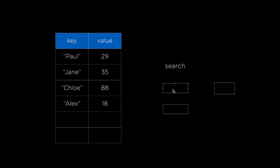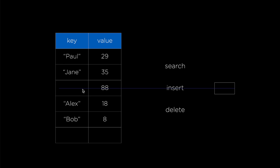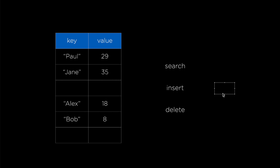One is Insert, and that would be adding a new entry to this table by saying Bob is 8, for example. Another one is Delete, and that would be deleting an existing entry — for example you might say you don't want this data about Chloe anymore. When you implement a dictionary, you should be able to implement it ideally so that all of these operations take only O(1) in time on average, and a hash table is a good way to do that.